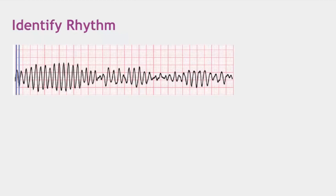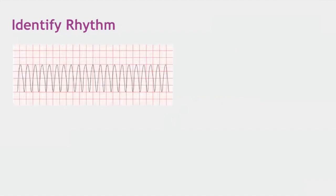An ECG spotter was presented. The pattern shown is Torsades de Pointes — some answers suggested VT, which is understandable since half the strip appears as a ventricular tachycardia pattern, but looking at the whole rhythm you can see the axis is twisting along itself. Torsades de Pointes is classically seen in severe magnesium deficiency.